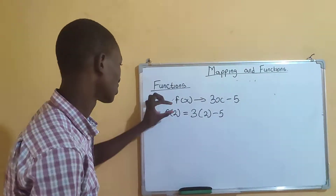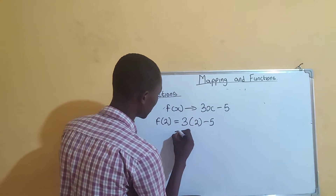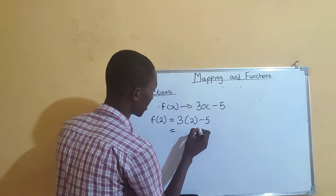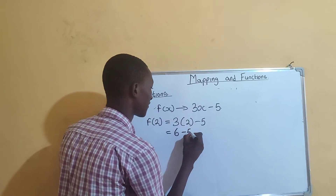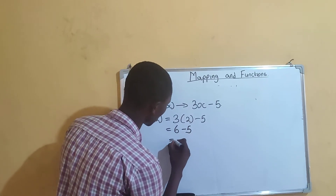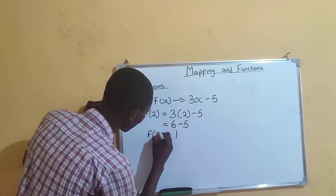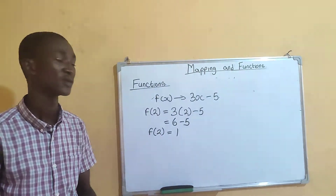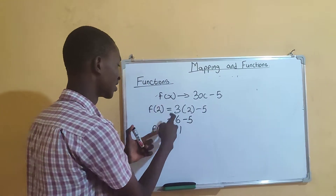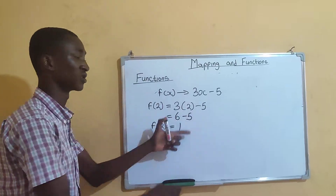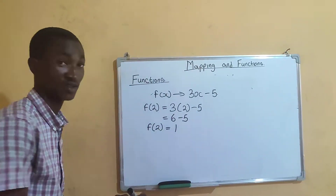From there, 3 multiplied by 2 is 6, minus 5 gives you 1. So f(2) = 1. That means when you replace x with 2, you get 1.